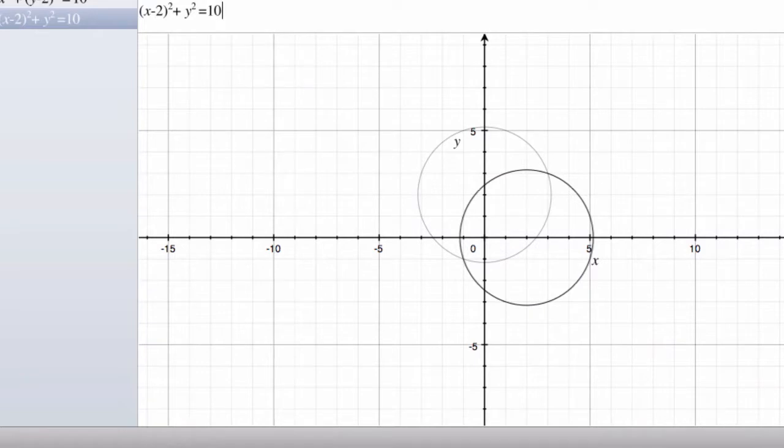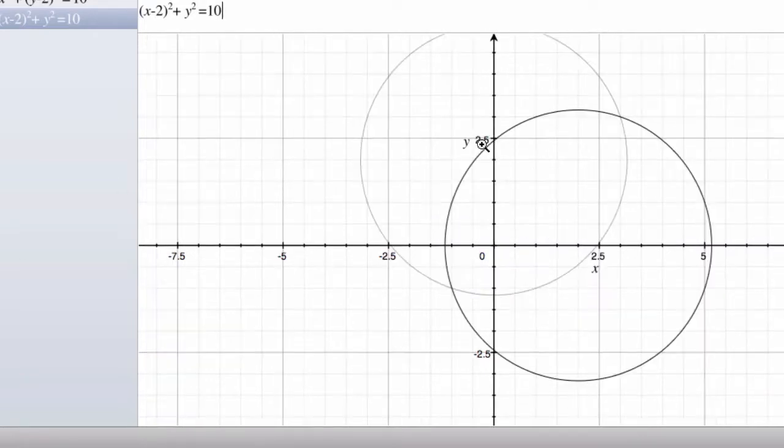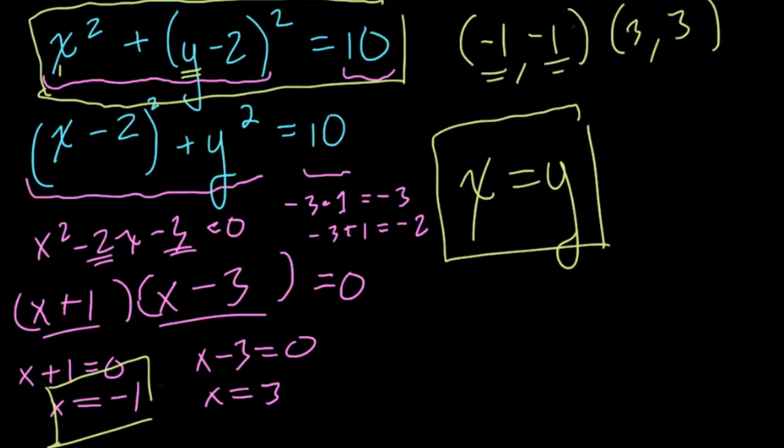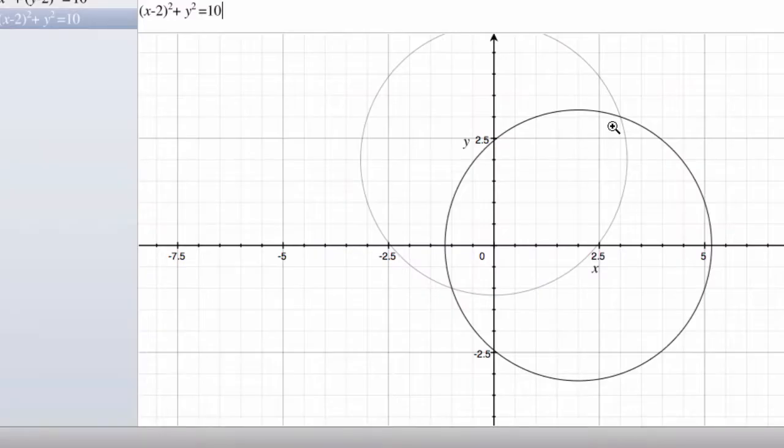So here are the intersections of two circles. And you can see where these two things meet. It's precisely what we said. We have (-1, -1), and then we have (3, 3). Let's just take a look back. And you can see that that's pretty much exactly what we have there.